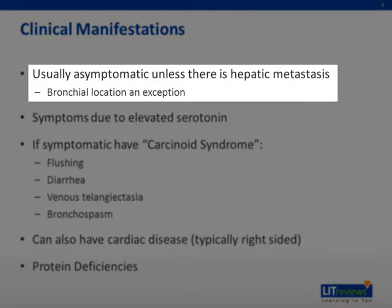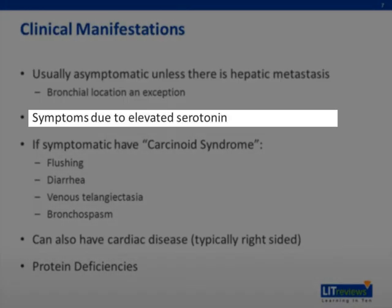While the tumor is usually asymptomatic, the previously mentioned products — and in particular serotonin — are the cause of carcinoid syndrome. The reason that most tumors are asymptomatic is that the products secreted pass through the portal venous system and are cleared by the liver. However, in the case of hepatic metastases, the products are no longer cleared by the liver and cause the patient to become symptomatic.